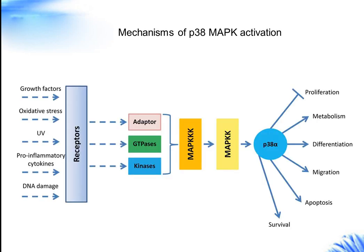The P38 pathway can be activated either by different receptors or by various environmental stresses such as osmotic, redox, or radiation stress. For example, one of the CDC-25 enzymes activated by UV irradiation controls cell cycle progression. The primary MAP2Ks for the P38 module are MKK3 and MKK6, and the MAP3Ks include MLK2 and MLK3, MEK, ASK, TAK1, and TAO1 and TAO2.